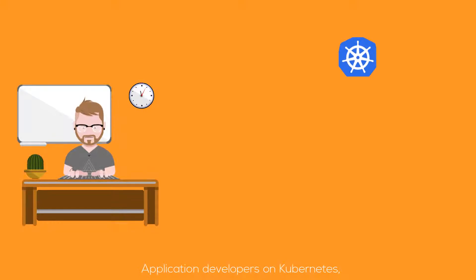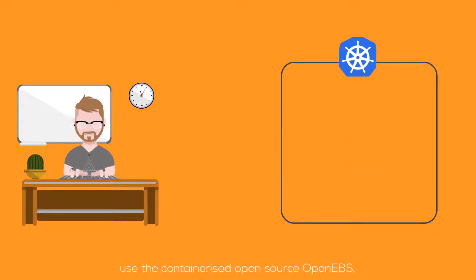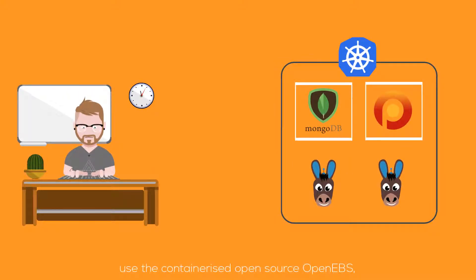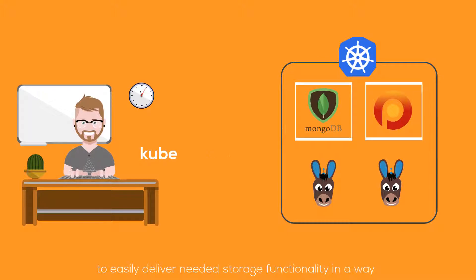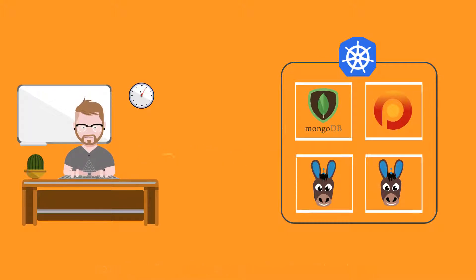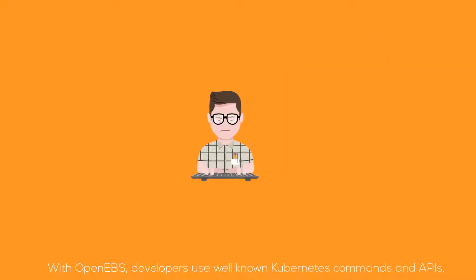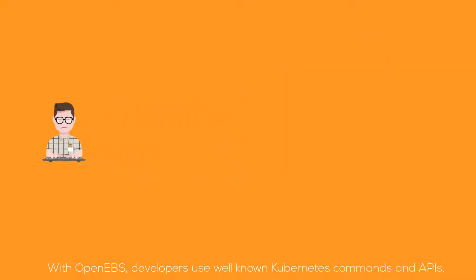Application developers on Kubernetes use the containerized open source OpenEBS to easily deliver needed storage functionality in a way that is familiar to cloud-native developers and architects. With OpenEBS,